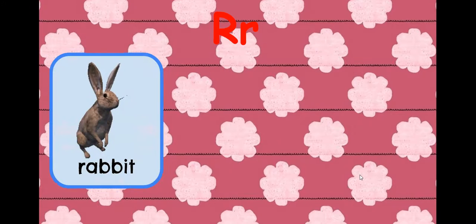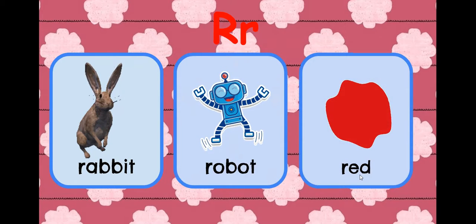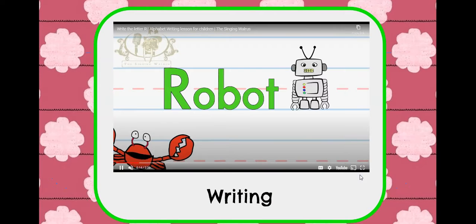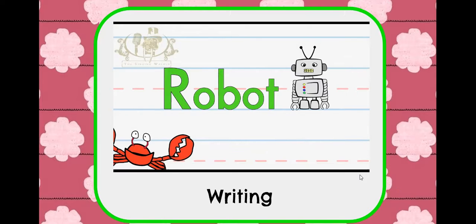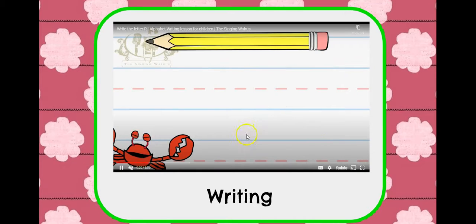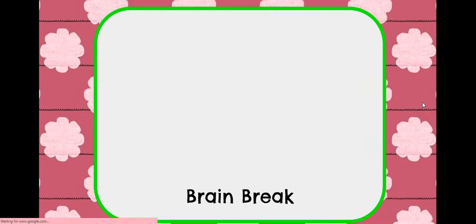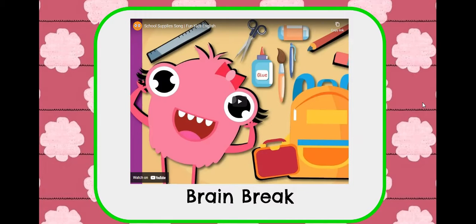Then we go into the phonetic flashcards — rabbit, robot, red. You can ask them to find something or not. Then we go into writing, which is a cute activity to introduce either in the air, or if they want to try to write it they can write it on the board, on paper, or on their hand.